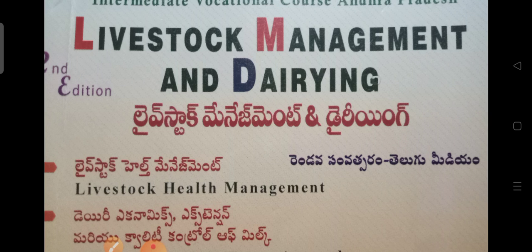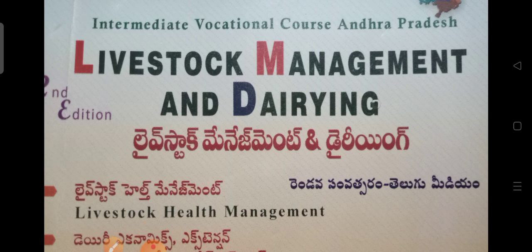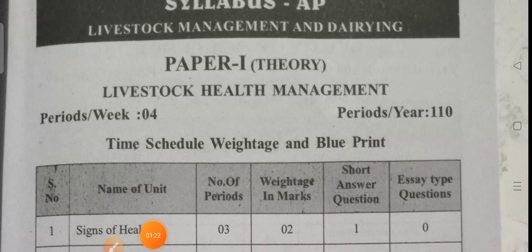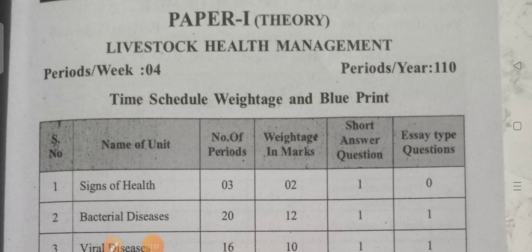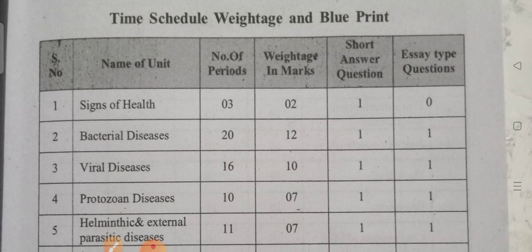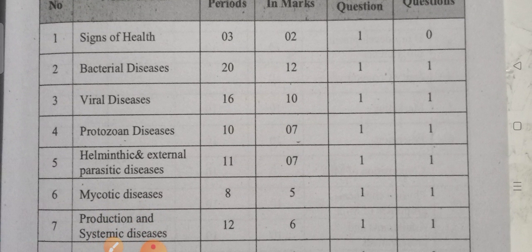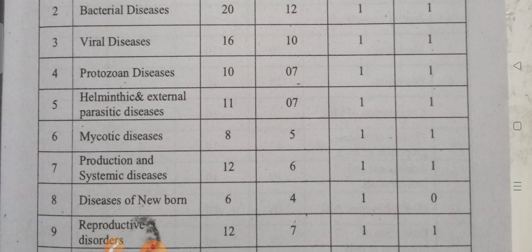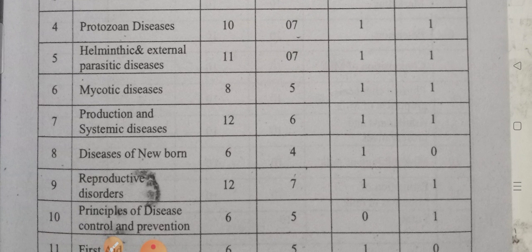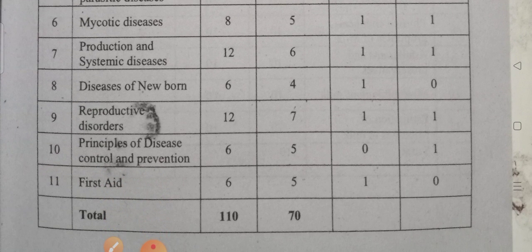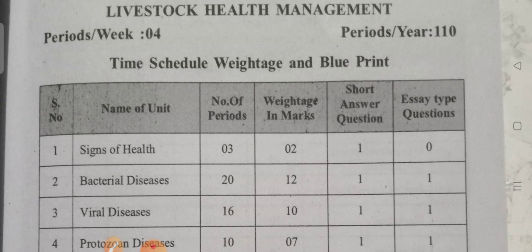I will try to give you very important questions and answers in PDF format. For that, you need to pay 25 rupees. Paper 1 is Livestock Health Management for the second year students in Andhra Pradesh. There are eleven chapters: Science of Health, Bacterial Diseases, Viral Diseases, Protozoal Diseases, Helminthic and External Parasitic Diseases, Mycotic Diseases, Production and Systemic Diseases, Diseases of Newborn, Reproductive Disorders, Principles of Disease Control and Prevention, and First Aid.